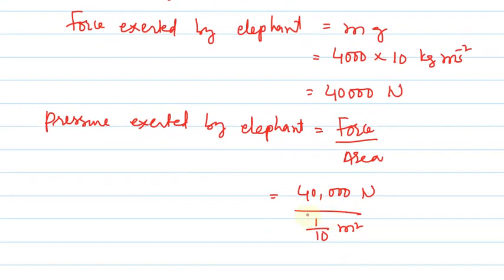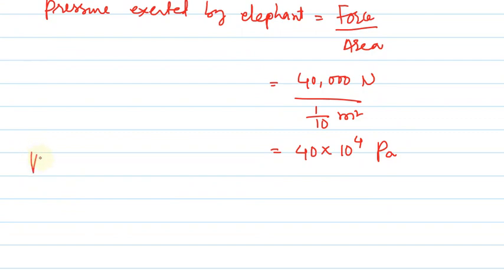This can be written as 40 into 10 to the power of 4 pascals, since newton per meter square can be written as pascals. So pressure exerted by elephant is 40 into 10 to the power of 4 pascals.